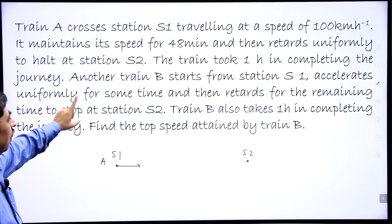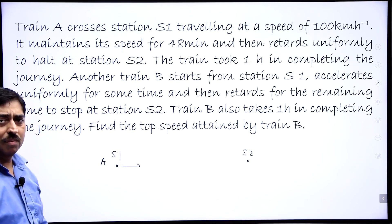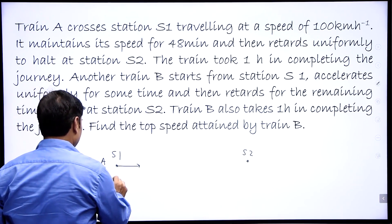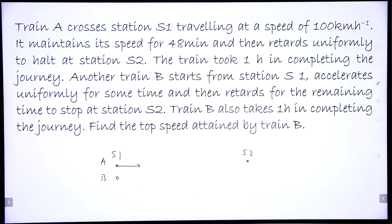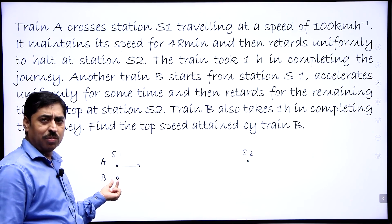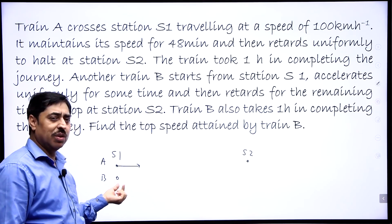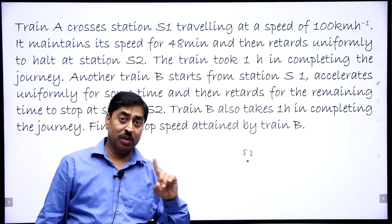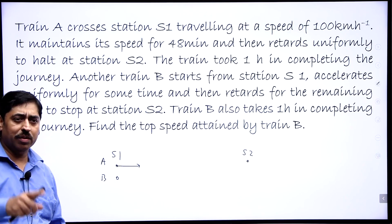The question talks about another train B. Train B starts from station S1, accelerates uniformly for some time, then retards for the remaining time, and ultimately comes to halt at station S2. This train also takes one hour in completing the journey. Think of two trains on parallel tracks — one train is about to start from the station when the first train crosses through. So both actually start at the same time. Train B starts with zero initial velocity, train A is traveling at 100 km/h, and both reach station S2 in one hour. What is the top speed of train B? You have to find it out.